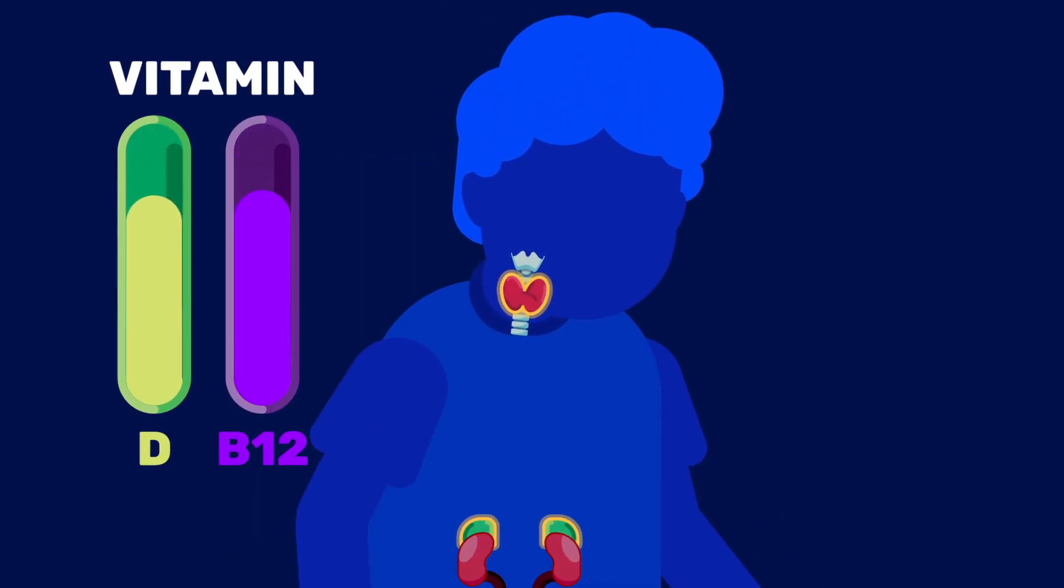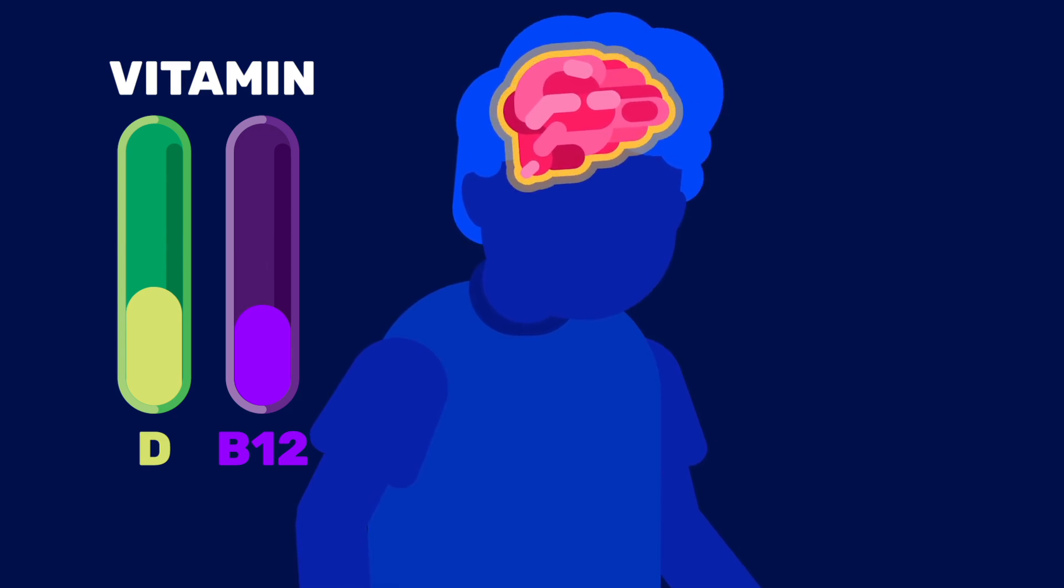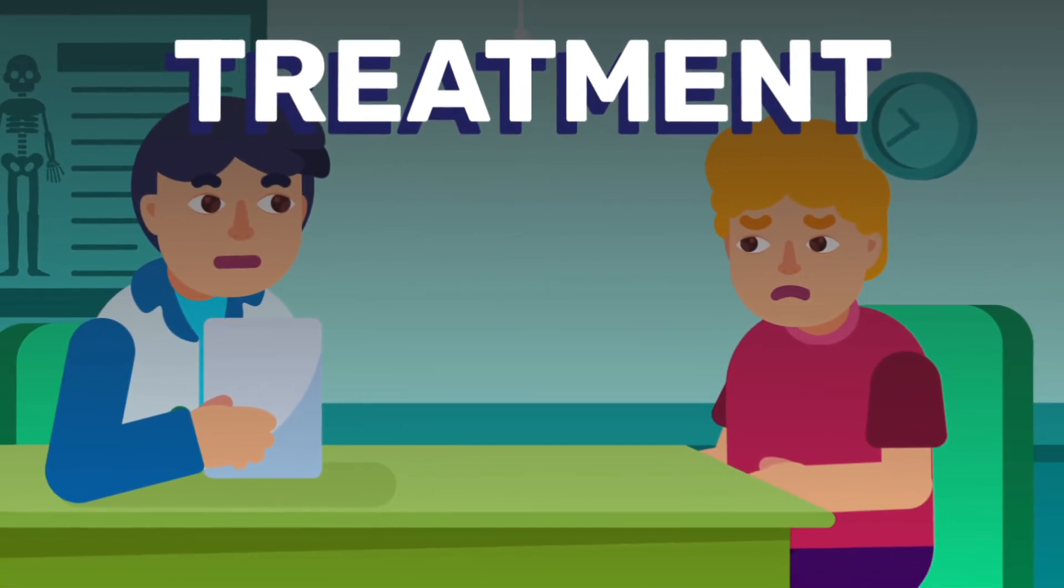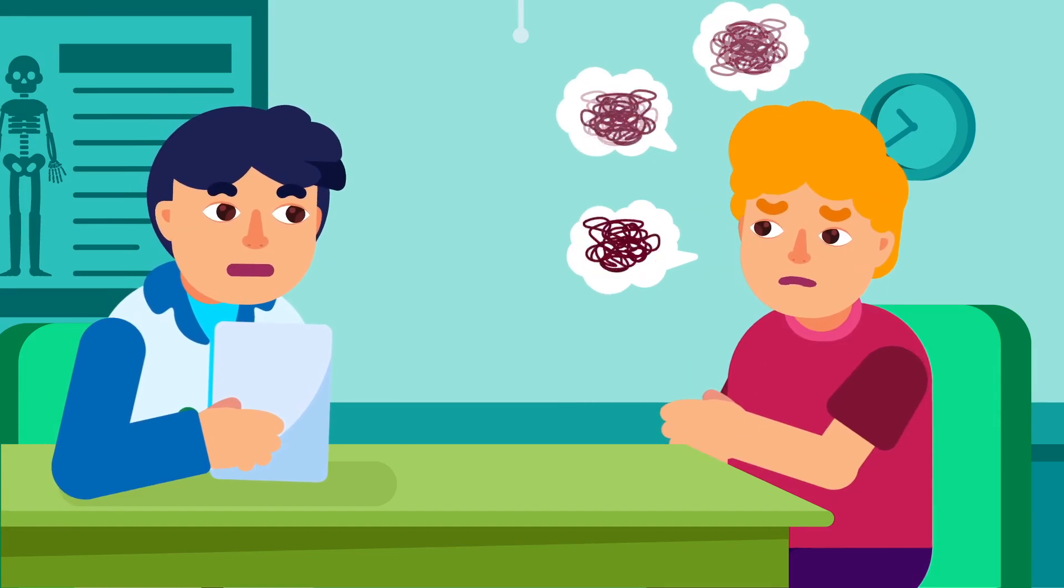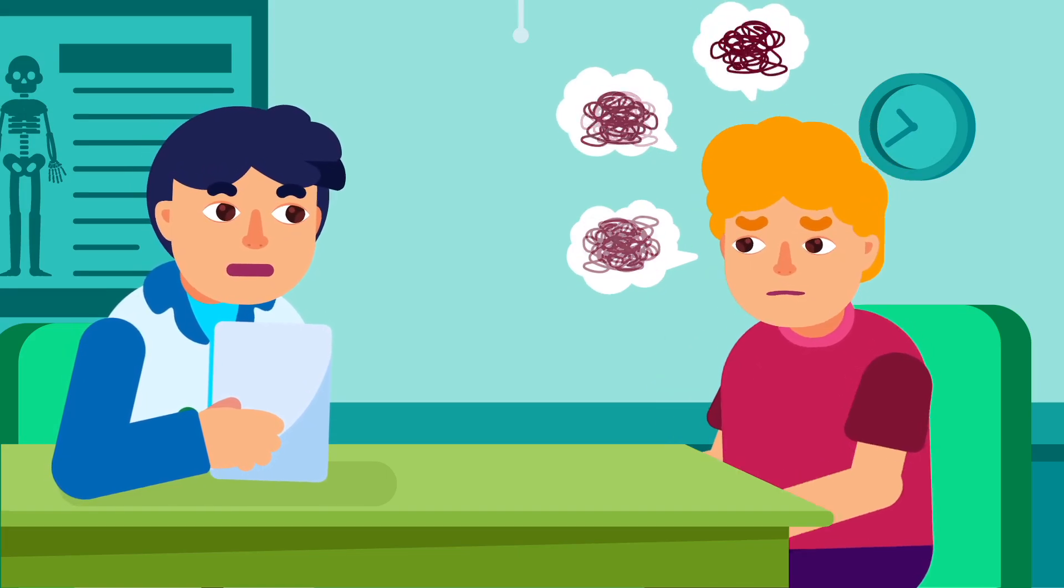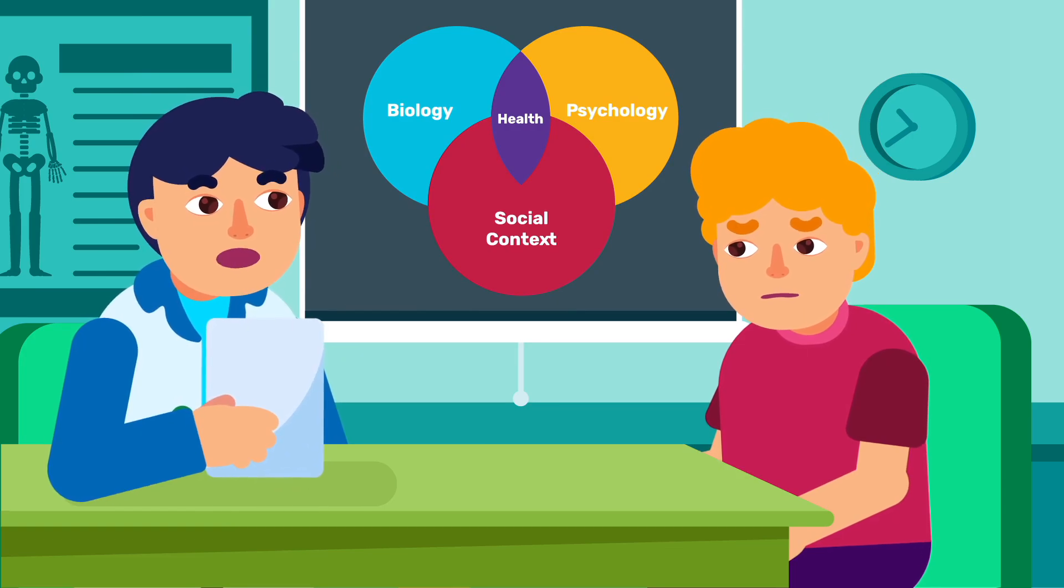Nutritional deficiencies include vitamin D and B12, and neurological cases include epilepsy and Alzheimer's. Treatment: Major depressive disorder, like all psychiatric illnesses, is treated using the biopsychosocial model of care.